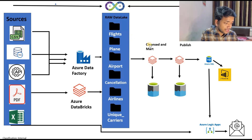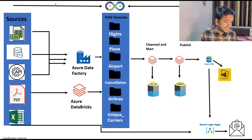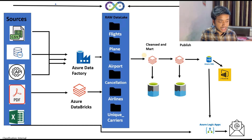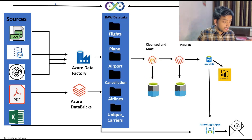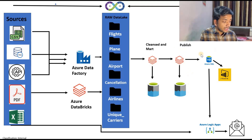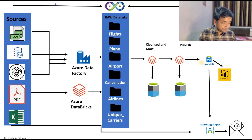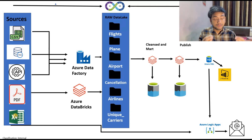After that I cleansed the data, removed some nulls, did some checks, and put it into the transformed data lake. Then I created business logic, wrote marts, created dimension and fact tables, and put it into the mart data lake. After that, once the data is ready, we publish it into the final layer, which is the data lake.